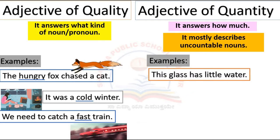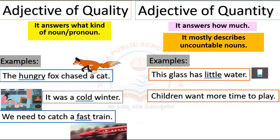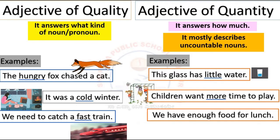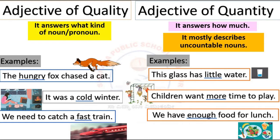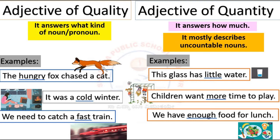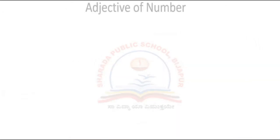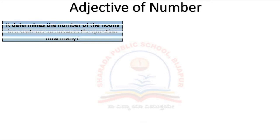Adjective of quantity answers 'how much' and mostly describes uncountable nouns. Examples: 'This glass has little water.' 'Children, one more time to play.' 'We have enough food for lunch.' The underlined words in these sentences are adjectives of quantity.